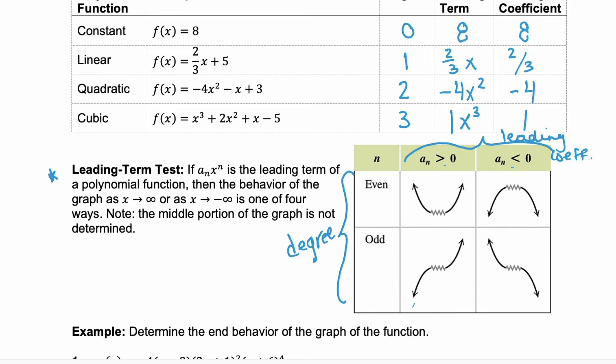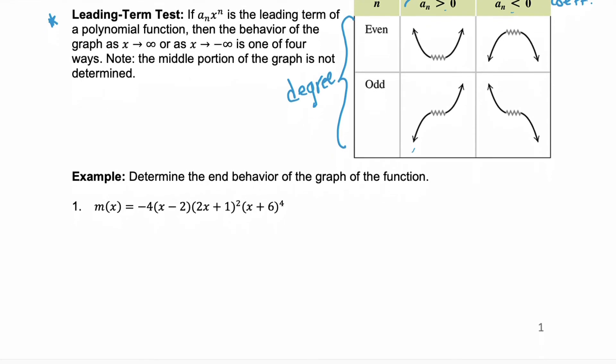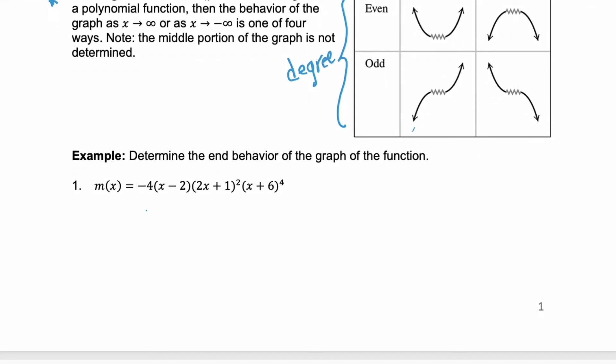Let's look at an example. So, here we need to determine the end behavior of the graph of the function. Notice that this function is already factored for us. So, what we need to do to find that leading term is multiply the leading terms for all of these factors. We're multiplying -4x. We're multiplying 2x². And we're multiplying x⁴. You have to include these exponents.